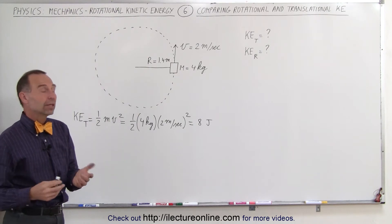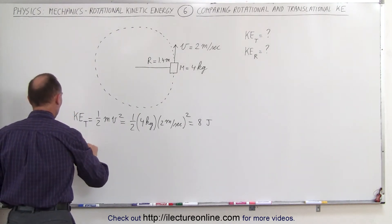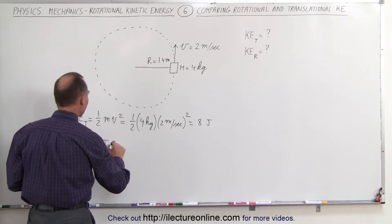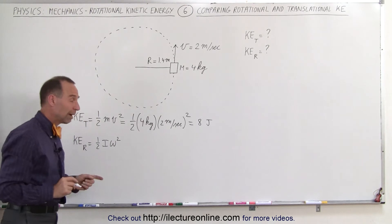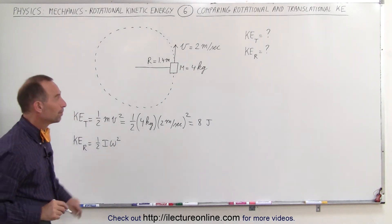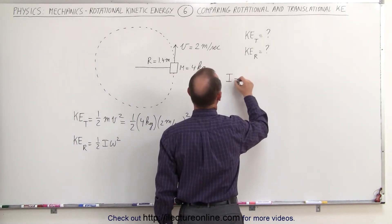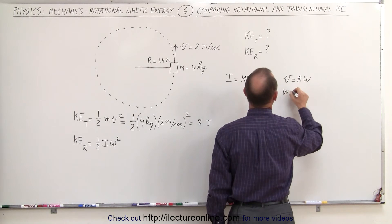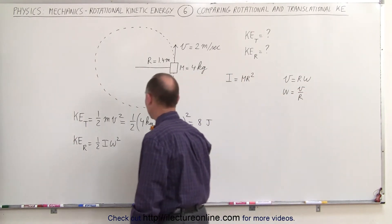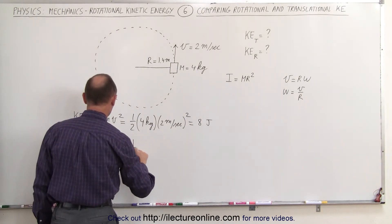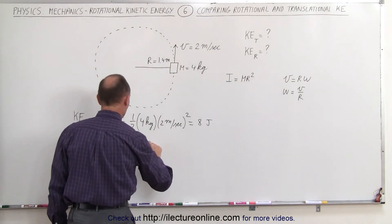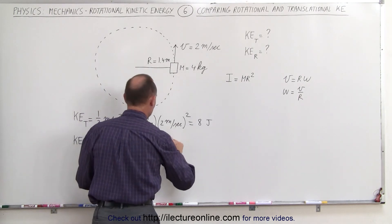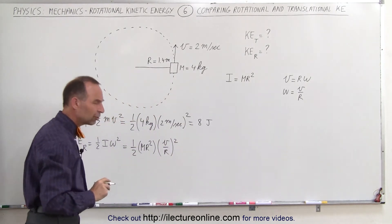Now what if we calculated the rotational kinetic energy? Kinetic energy rotational is equal to the equivalent equation, but now in rotational units: one half times the moment of inertia times omega squared. That means we have to find the moment of inertia and the angular velocity. The moment of inertia of a point mass going around in a circle is equal to mr squared. We also know that the tangential velocity is equal to r times omega, which means omega is equal to v over r. We can go ahead and plug that in: one half times I, where I equals mr squared, times omega squared, which is v divided by r, quantity squared.